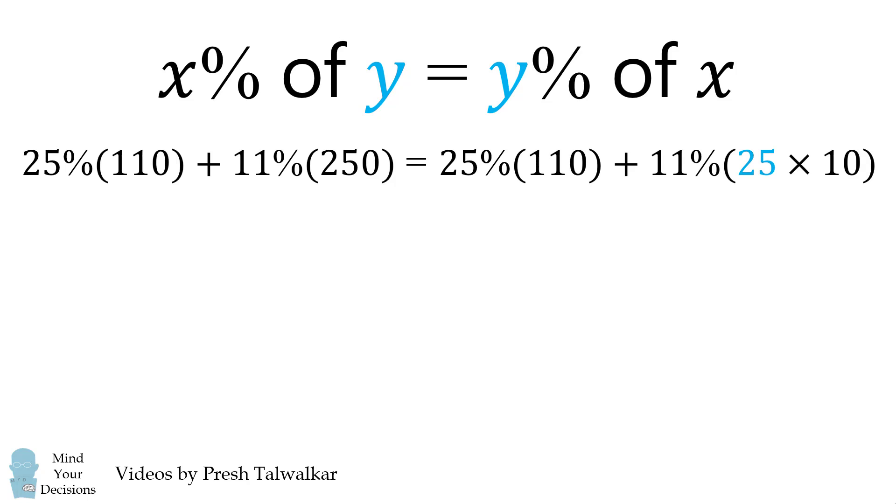We're now going to flip the 25 and the 11%. So we again flip these two numbers, so we have 25% of 11 times 10. Now 11 times 10 is equal to 110. So we now have 25% of 110 plus 25% of 110. This will be equal to 50% of 110, which is much easier to do, and that's equal to 55.